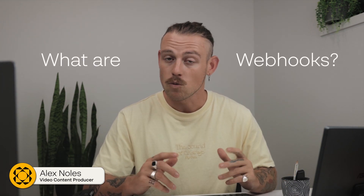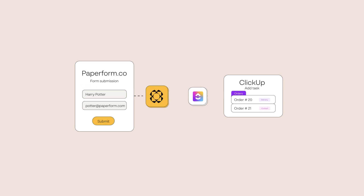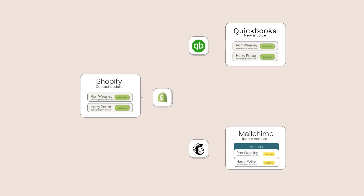Before we get started, let's make sure we're on the same page. What are webhooks? In simple terms, webhooks are a way for one application to notify another application when something has occurred. For example, you have an e-commerce site and you'd like to be updated when someone places an order. You can use webhooks to send that information to your accounting software or your customer relationship management tool, in real-time.